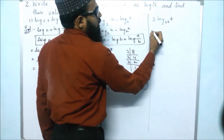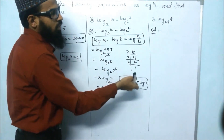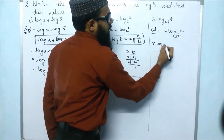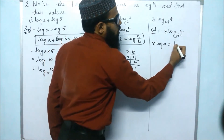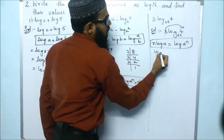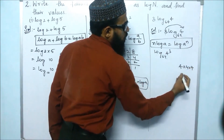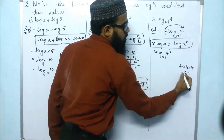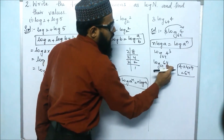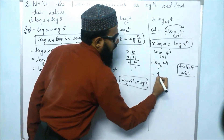For the third bit: 3 log 4 base 64. Using the identity n log a equals log a to the power of n in reverse, the 3 moves to the power. So we get log 4 to the power of 3, base 64. Multiplying 4 three times: 4×4×4 gives 16×4 equals 64. So log 64 base 64, and since they are the same, the value is 1.